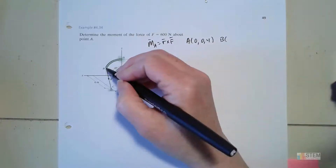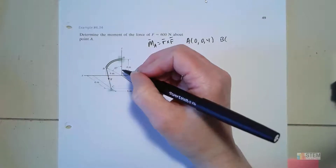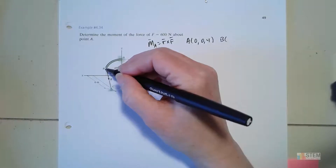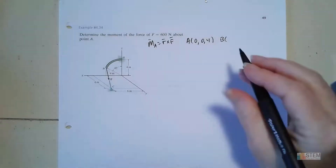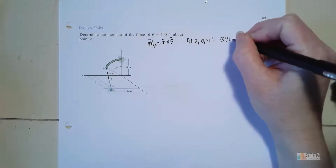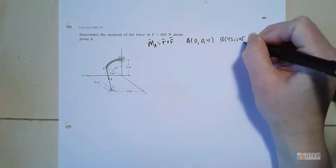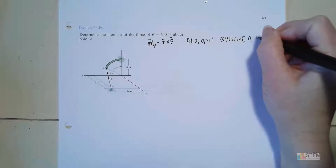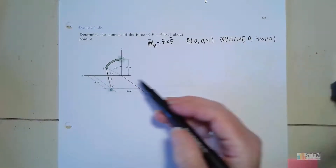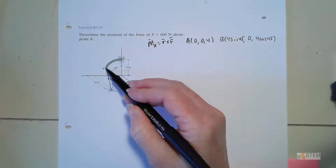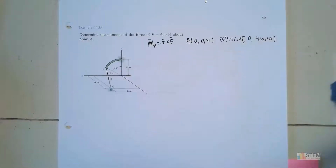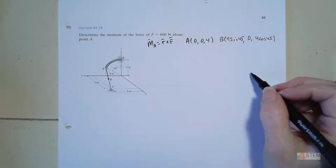Point B is over here. This one's in the x-z plane — we can tell because it has a straight line drawn right above the x-axis, so there is no y-component. For that one, we're going to have 4 sin(45) for x, 0 for y, and 4 cos(45) for the z-coordinate. I know that because the length from the origin to B is 4 meters, and we've got this 45-degree angle. So you just split it into x and z components.